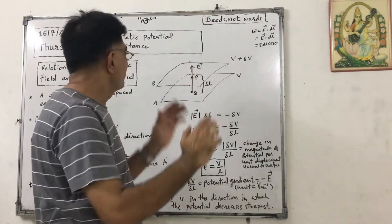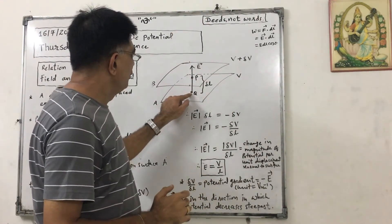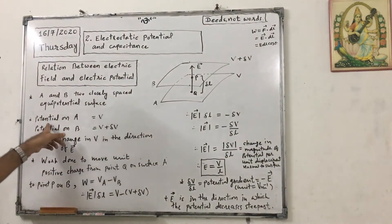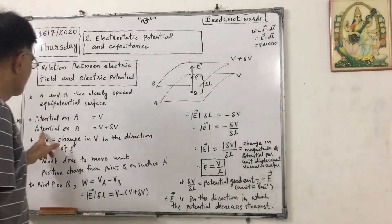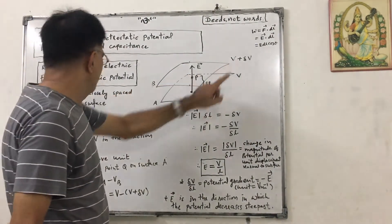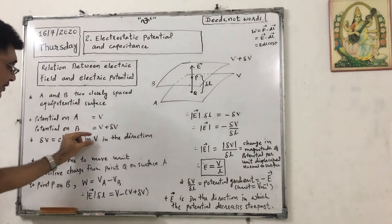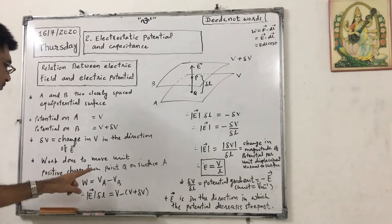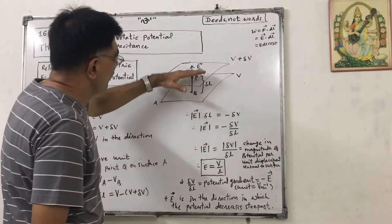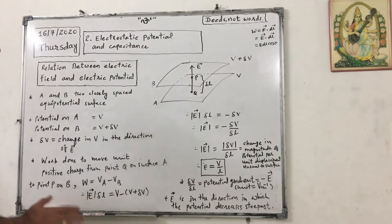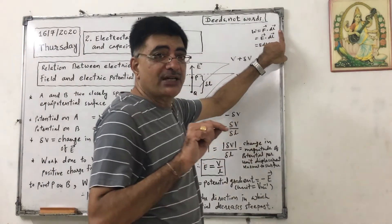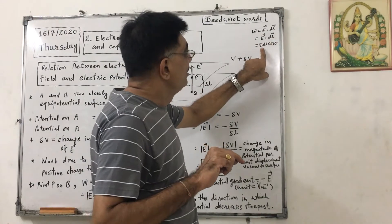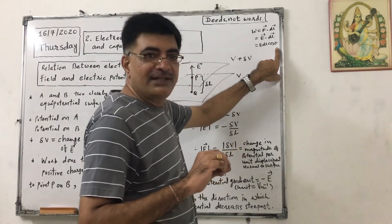The electric field is in this direction. Point Q is here and point P is here. Potential on surface A is V, and potential on surface B is V plus delta V. Delta V is the change in potential in the direction of vector E. Work done to move unit positive charge from point Q to point P — we know that work equals F dot d, but for unit charge force is called electric field intensity, so it is E dot dL, which expands to E dL cos theta.